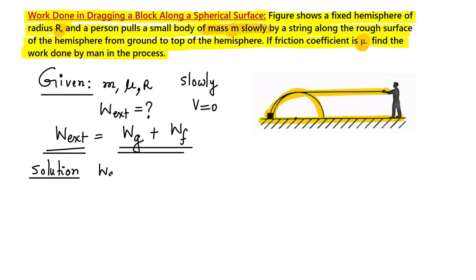Work done by gravity is easy to find. The height gained is R, since the block moves from the ground to the top of the hemisphere. So the work done by gravity — or equivalently, the gain in potential energy — is mgR. This much work must have been done against gravity to lift the block, and it must have been done by the external agent.